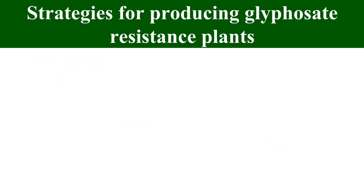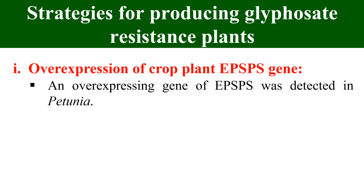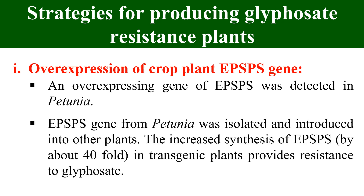What strategies can we adopt to produce glyphosate resistant plants? The first strategy is overproduction of the target protein — here the target enzyme EPSPS. If we increase the copies of this EPSPS enzyme, we will have enough enzyme that after attack by glyphosate we still have enough enzyme to carry out normal functioning. The gene for EPSPS was generally taken from petunia. After isolating the gene from petunia and introducing it into our plant, we can increase the production level of EPSPS enzyme in our transgenic plant, ultimately giving resistance to glyphosate. These plants can tolerate glyphosate at a dose 2 to 4 times higher than that required to kill wild type plants.